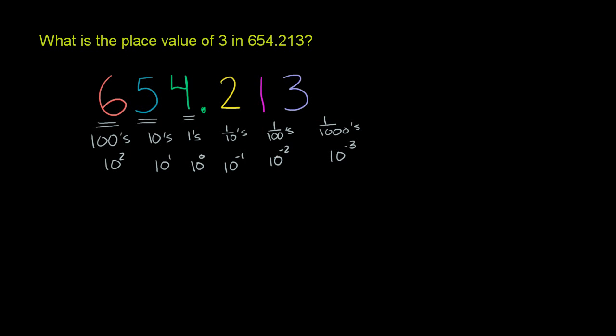Now, just to answer the question, what is the place value of 3 in 654.213? The place value is thousandths. And that would essentially answer their question. But to make sure that we really understand what this means, I'm going to rewrite this number.